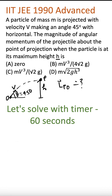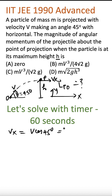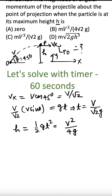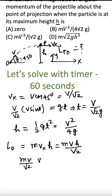So let me also solve the problem and you can match the answer here. What is vx? vx will remain constant because there is no acceleration in the horizontal x-direction. So vx = v cos45° = v/√2. And v/√2 = v sinθ = gt, therefore t = v/(√2·g). Hence h = ½gt² = v²/(4g). So angular momentum = m·vx·h = m·(v/√2)·(v²/4g) = mv³/(4√2·g). So option B is the answer.